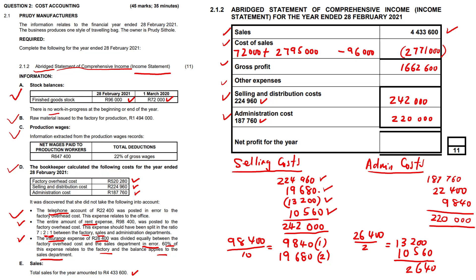These added up now give us the other expenses total: 242,000 plus 220,000 equals 462,000 rands - remembering it's a negative figure with a bracket around it. We subtract that from the gross profit to arrive at net profit, and we end up with a neat and almost round figure of 1,200,600 rands in total. That is your net profit for the year. Not a very difficult question, but it's required us to perform these calculations and do the workings.